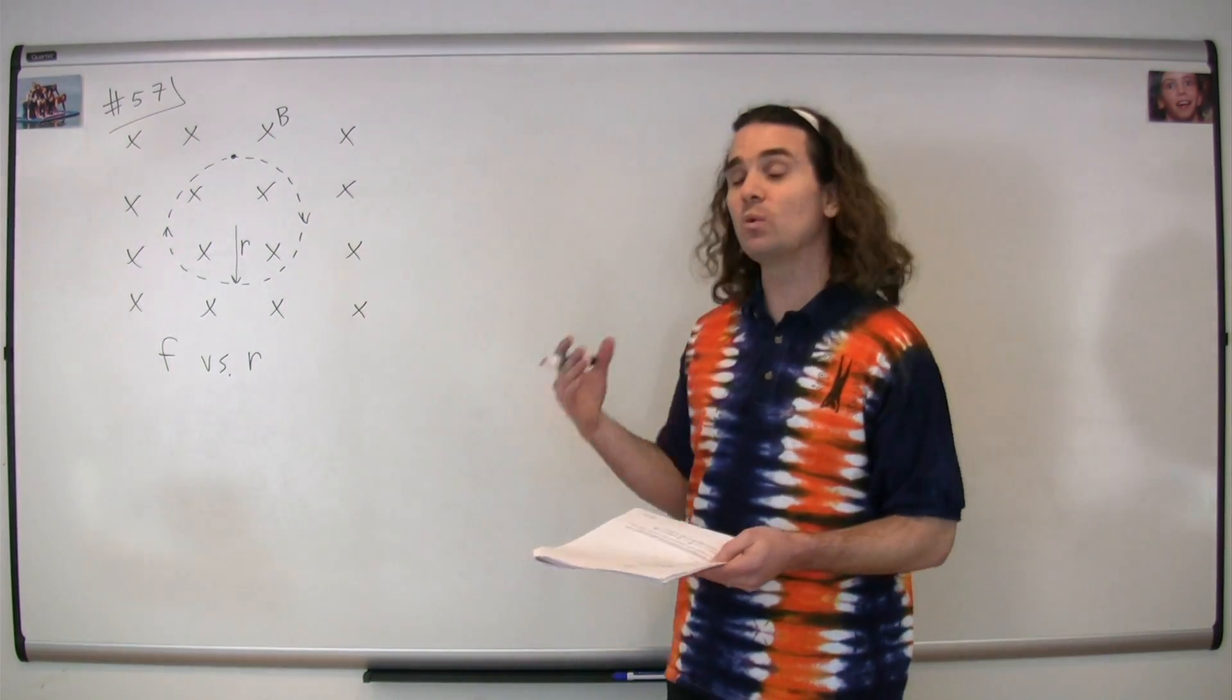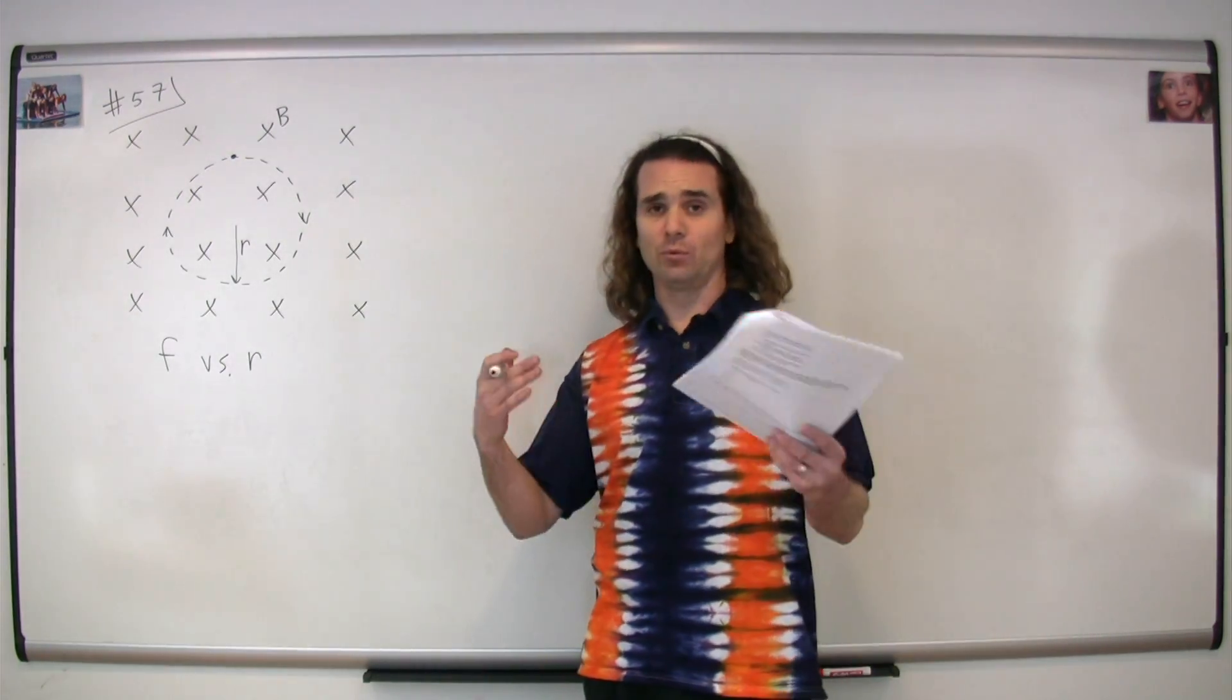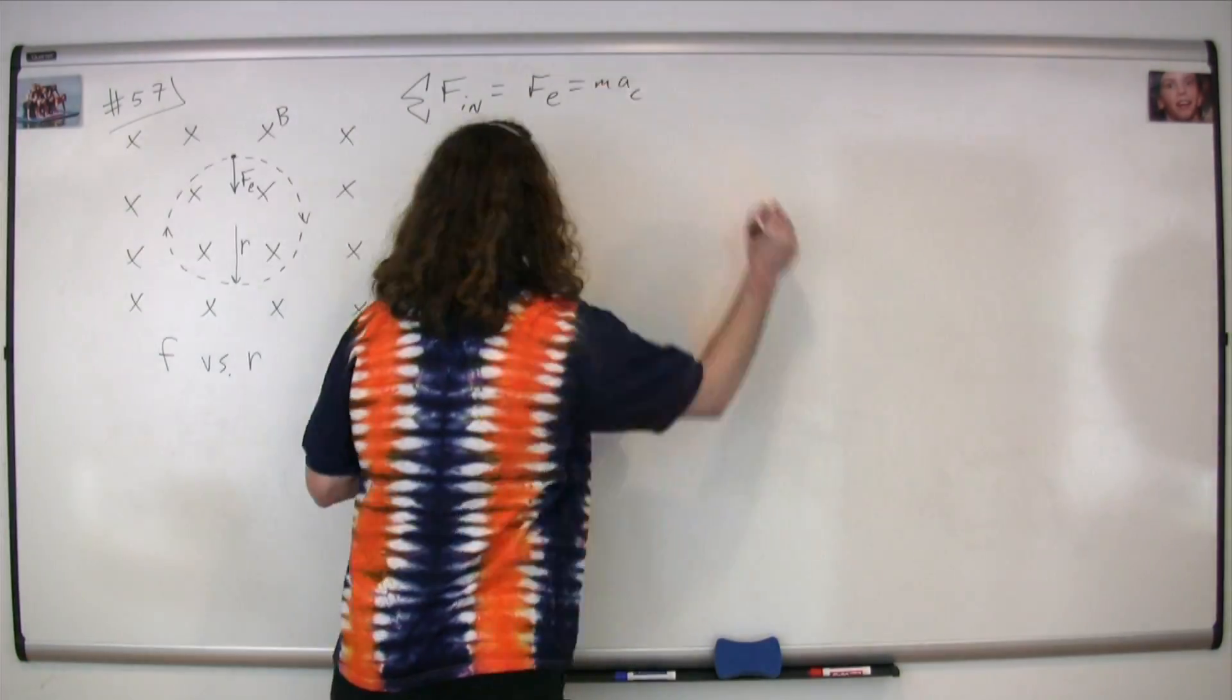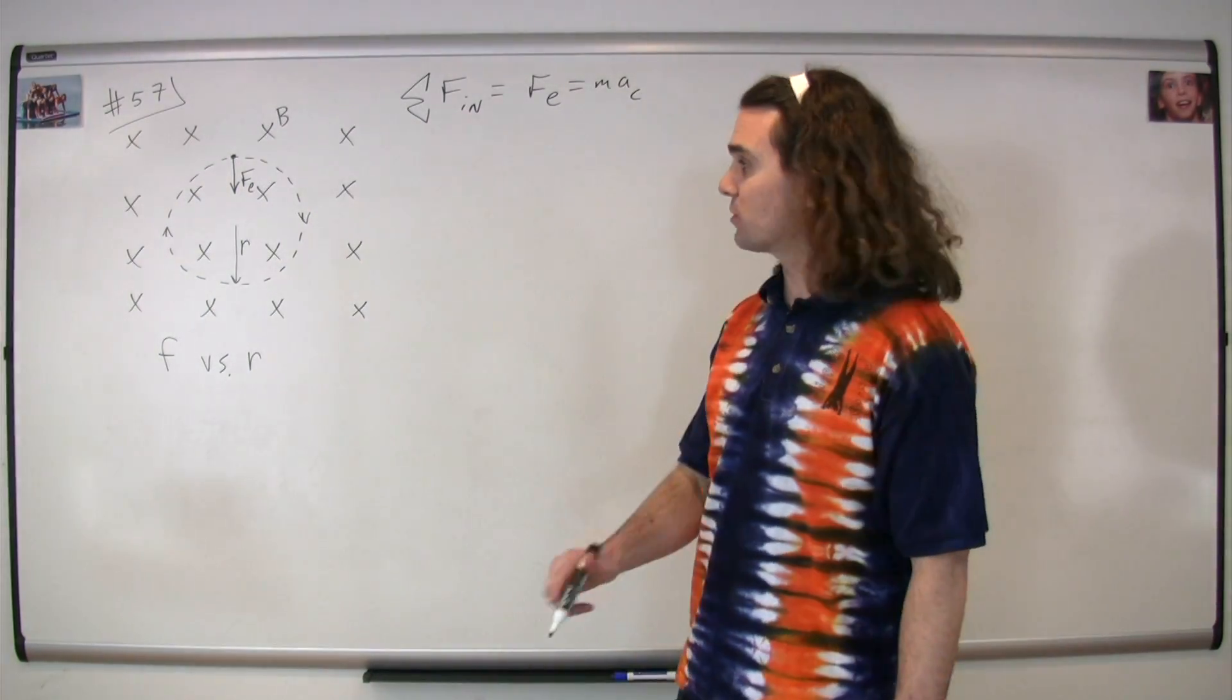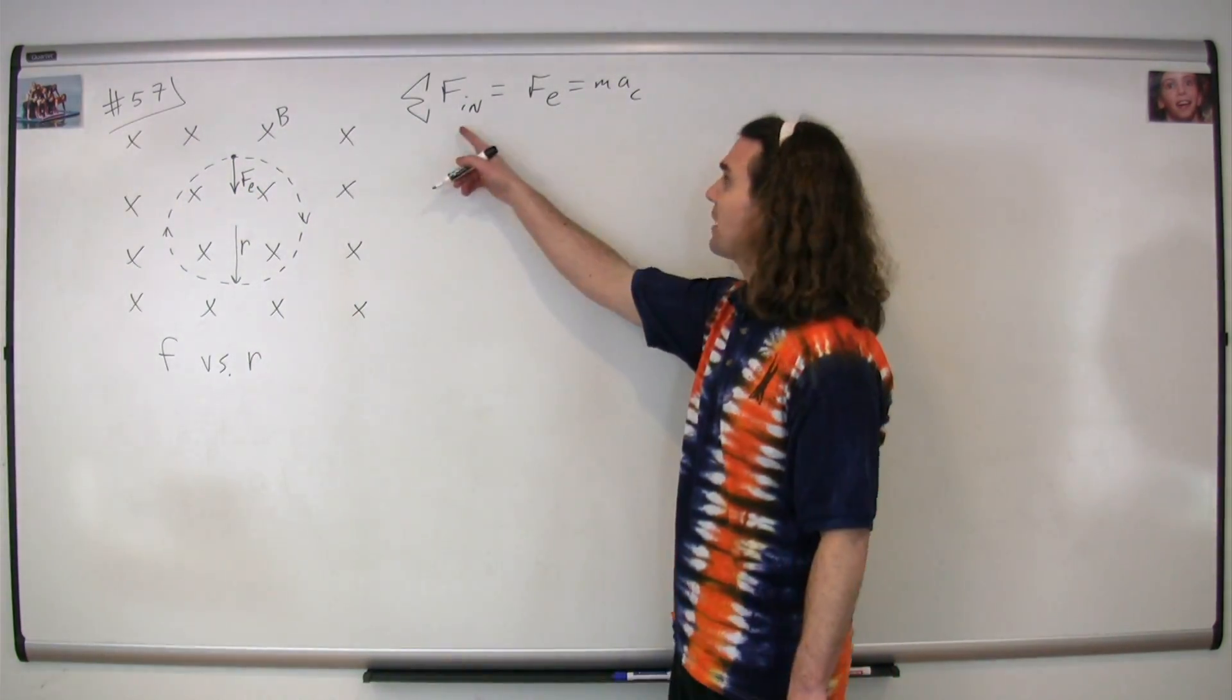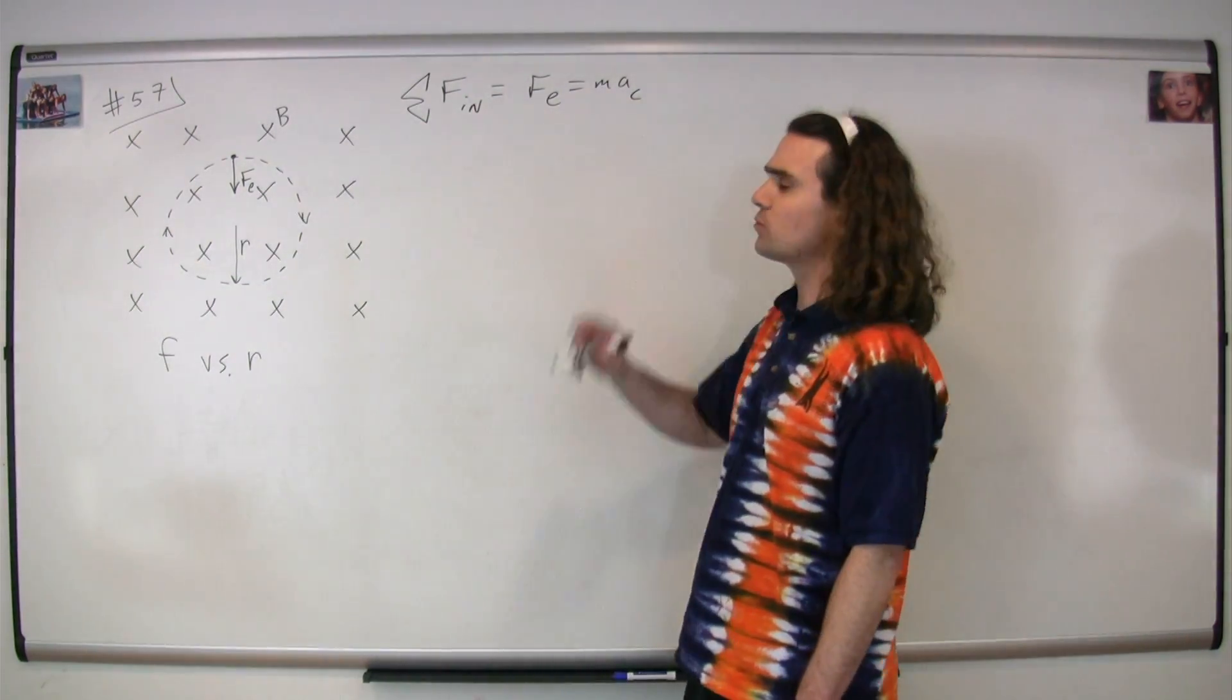We draw a free body diagram and sum the forces in the n direction. In our free body diagram, we have one force: the electric force. It's in toward the center of the circle, so we sum the forces in the n direction. The electric force is positive, and that's equal to mass times the centripetal acceleration.